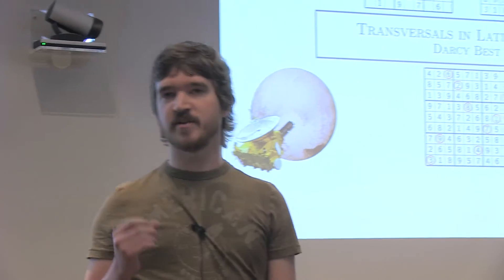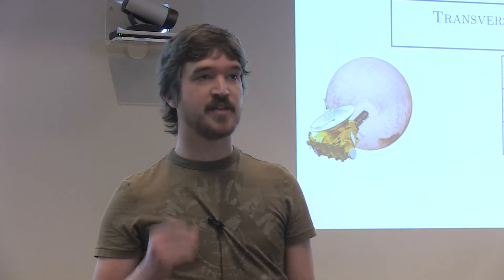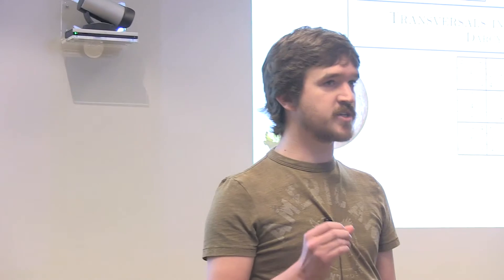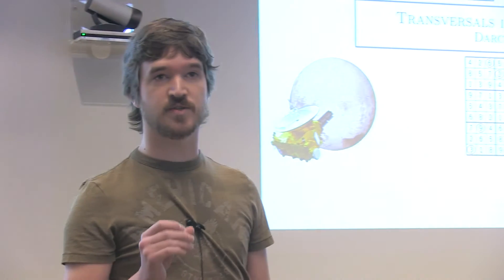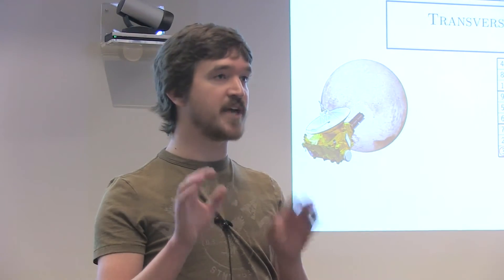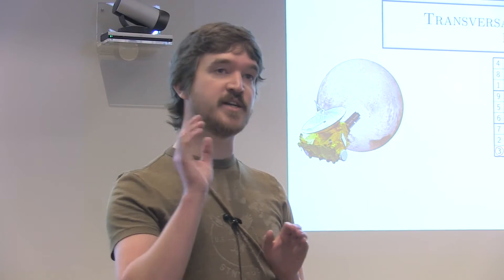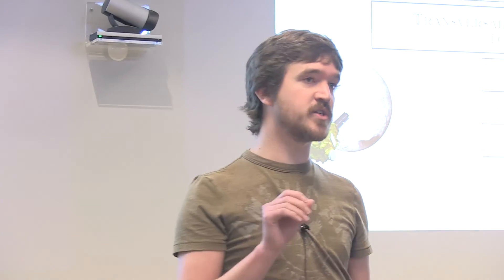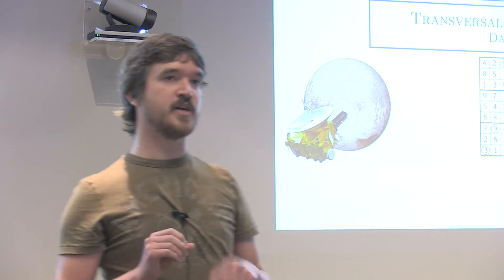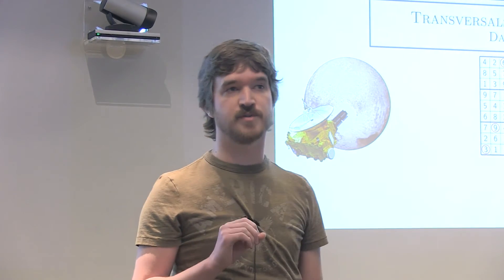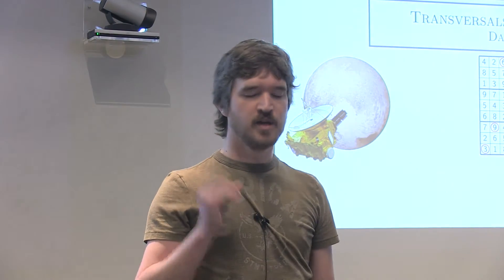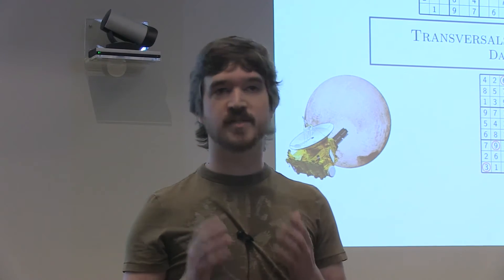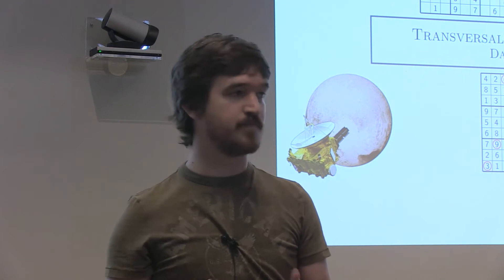Latin squares are very, very structured objects, and one of the structures within them are called transversals. A transversal is a selection of n of the entries such that you've hit each row once, each column once, and each of the symbols once. The bottom square here has a transversal circled.